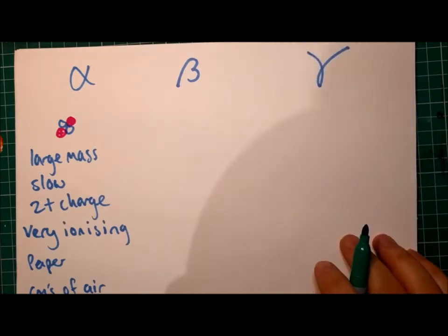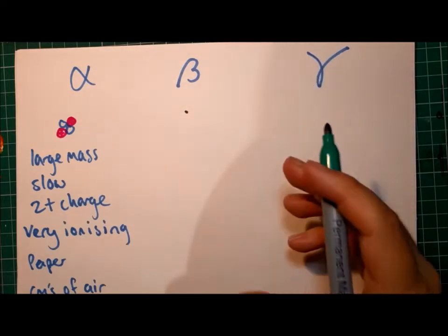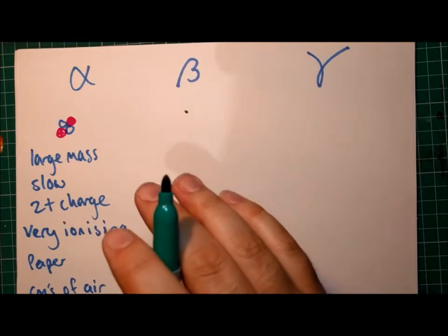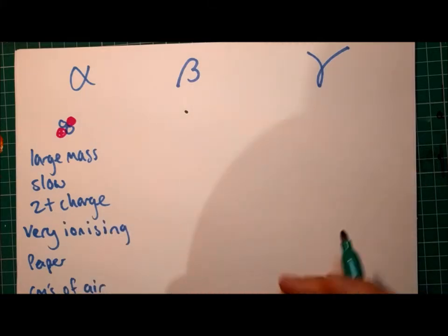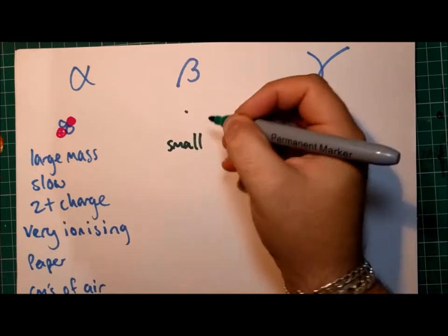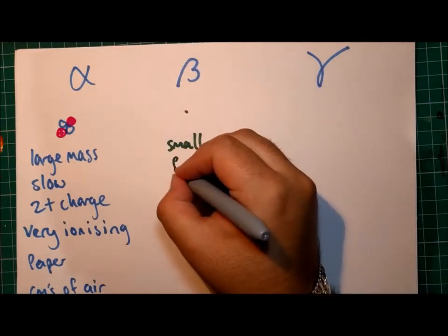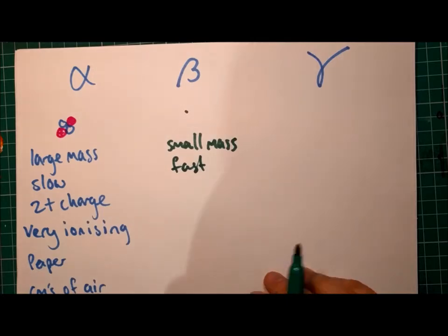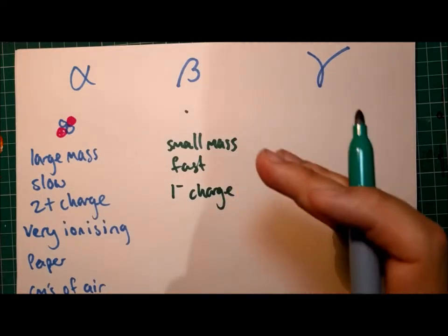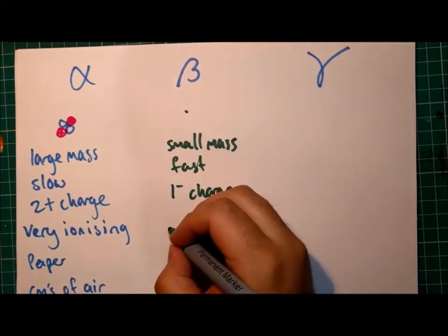The second type of radiation is beta. Now beta radiation consists of a very fast electron that's been emitted from the nucleus. This is not an electron from the electron shells. This is an electron that is created and emitted from the nucleus. Because it's essentially a very fast electron, it has a very small mass, the same as any other electron you may find. It is moving quickly, it's moving fast, especially compared to most particles, and it has a one minus charge, just like other electrons. Now beta radiation is moderately ionizing and can be stopped by a five millimeter sheet of metal.